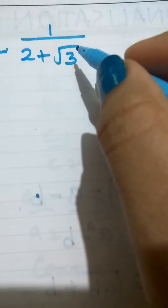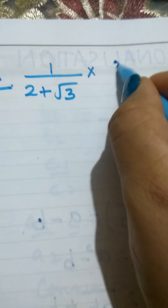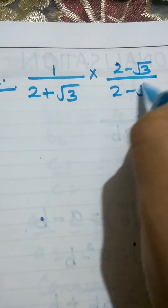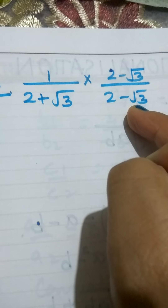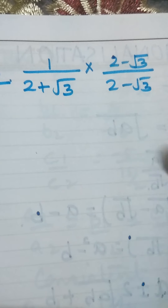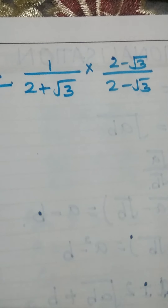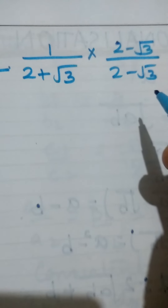Another example: we have a rational number and in the denominator we have an irrational binomial part. To rationalize this — rationalizing the denominator — we need to multiply by the conjugate: we change the sign of the denominator and multiply both numerator and denominator by that conjugate. The purpose is to get an (a+b)(a−b) form in the denominator, which becomes a² − b², so the irrational part is eliminated from the denominator.